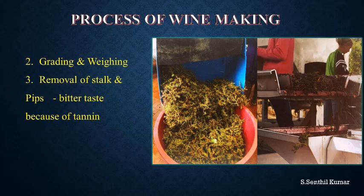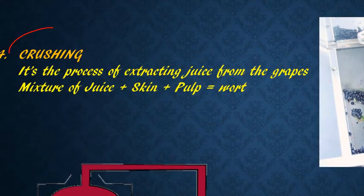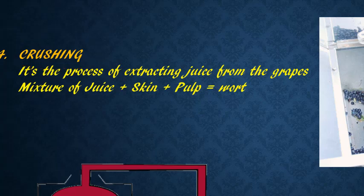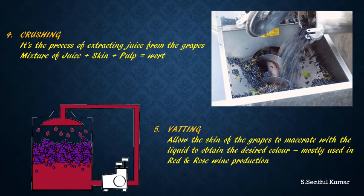The next step is crushing. After removal of stock and pips, the grapes are transferred to the mechanical press. It will squeeze the grape and extract the maximum amount of juice from the grape. This step is called crushing.